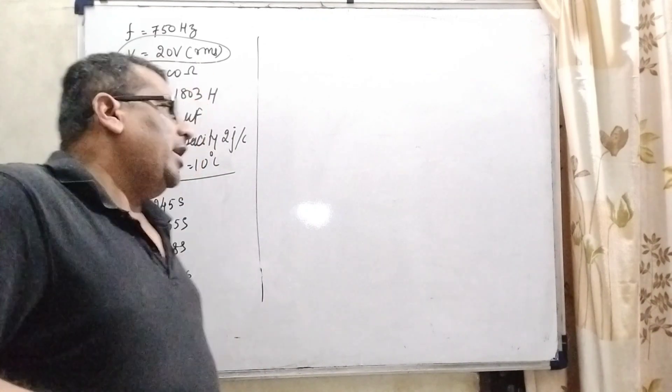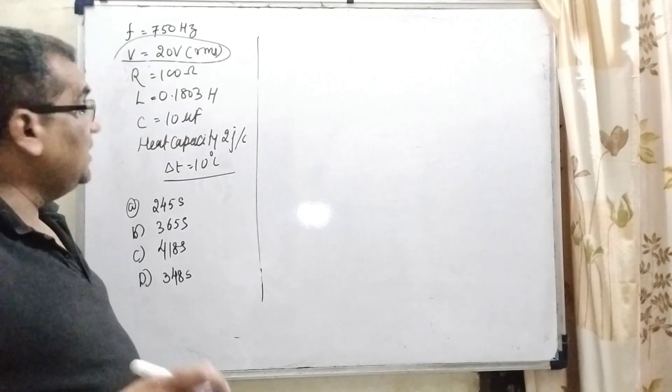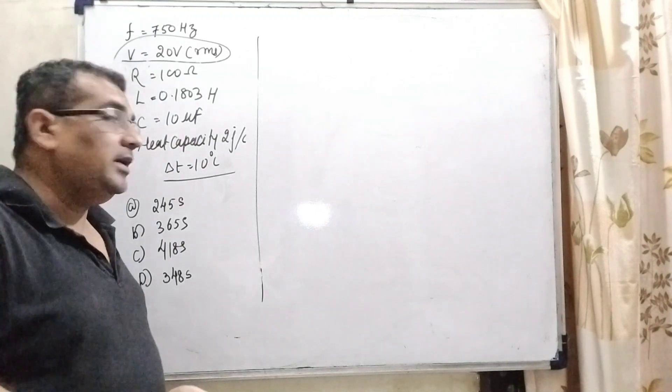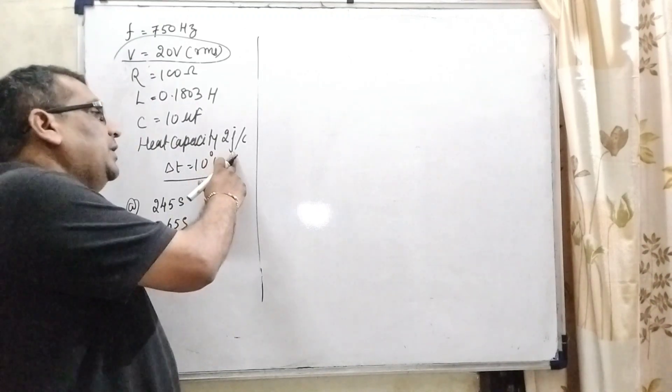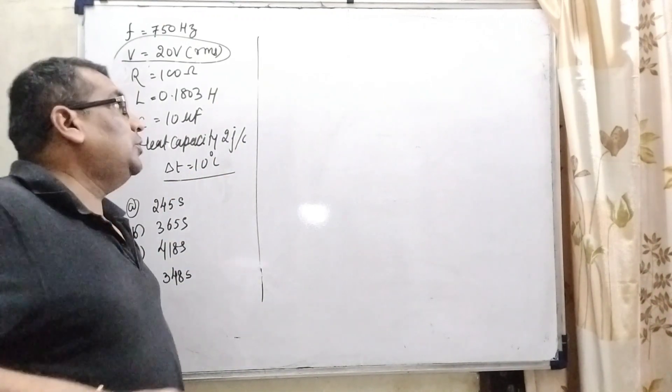In this question, we have given all this information: frequency, potential, resistance, inductance, capacitance, heat capacity. Important thing is the heat capacity is given that 2 joule per degree Celsius. Delta T is the temperature difference.